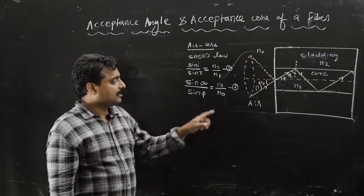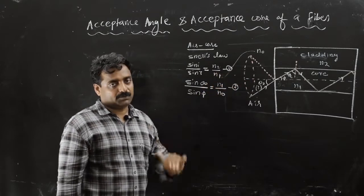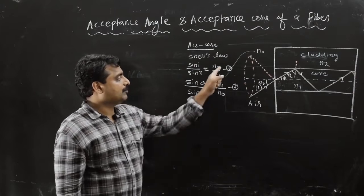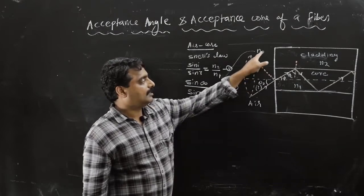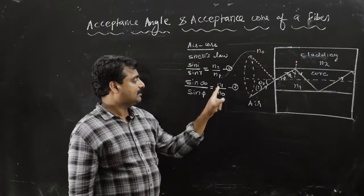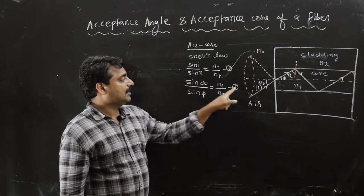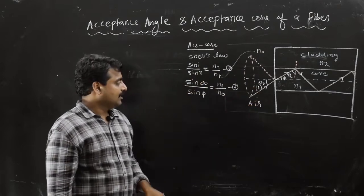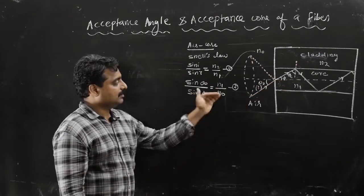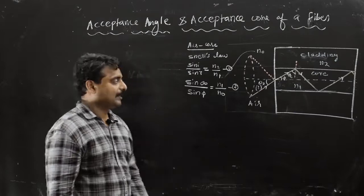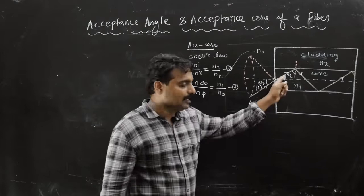Applying Snell's law: the second medium refractive index is n1, the first medium is air with refractive index n0. So we have sin theta 0 divided by sin phi equals n1 by n0. That is equation number 2.